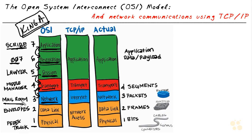The network layer, layer 3, just like the mailroom, is responsible for creating the labels — the source address and the destination address regarding the packet being sent. Just like the mailroom in our analogy had a street name and house number, the network layer is responsible for adding the IP source address and the IP destination address. Once it does that, it hands the information down to the data link layer, which is the envelope stuffer. The data link layer also adds information — for example, on an Ethernet network, layer 2 Ethernet addresses, also referred to as media access control or MAC addresses.